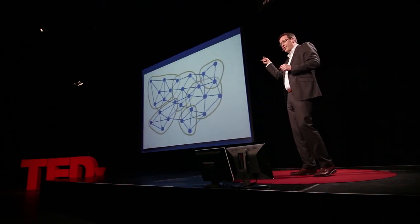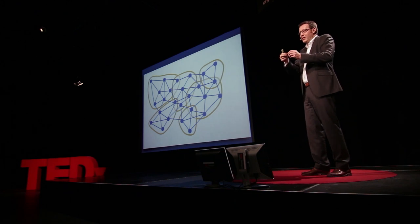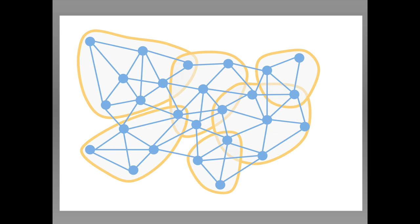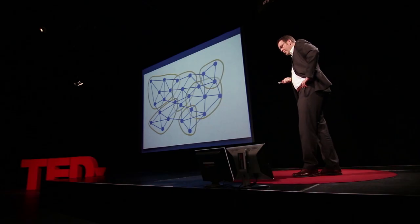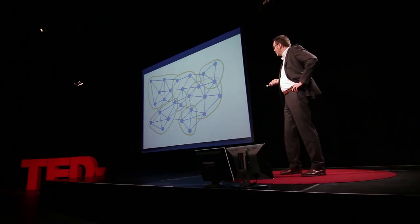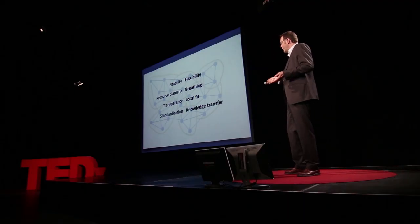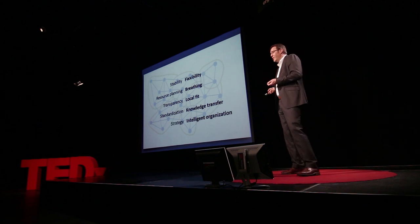If this is the new org chart, it defines how people and entities are interrelated and how they exchange. The properties of such a network are quite powerful: instead of stability, you get flexibility; instead of resource planning, you get breathing organizations; instead of one person knowing everything, you get local fit; instead of standardization, you get knowledge transfer; and instead of a fixed strategy, the organization itself becomes intelligent.